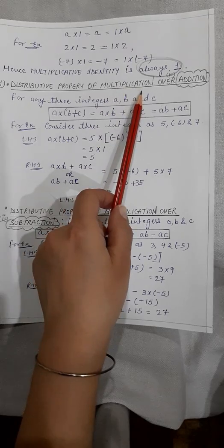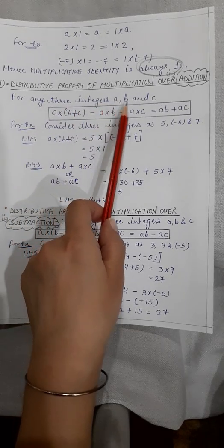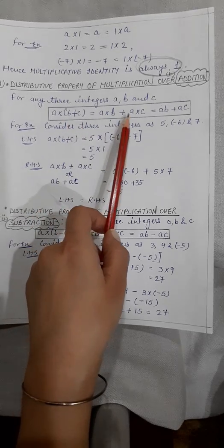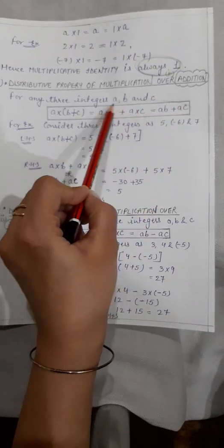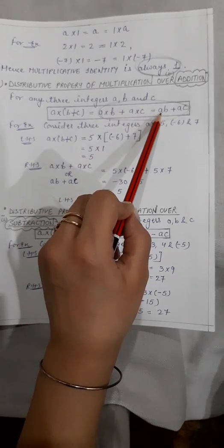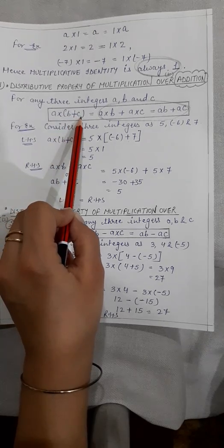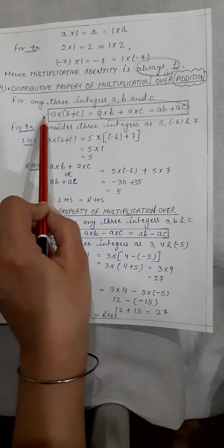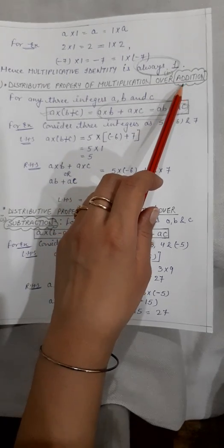Next is the distributive property of multiplication over addition. For any three integers a, b, and c: a into (b plus c) equals a into b plus a into c. You are distributing a among b and c both with a positive sign in between. This is the formula you have to keep in mind while applying the distributive property of multiplication over addition.